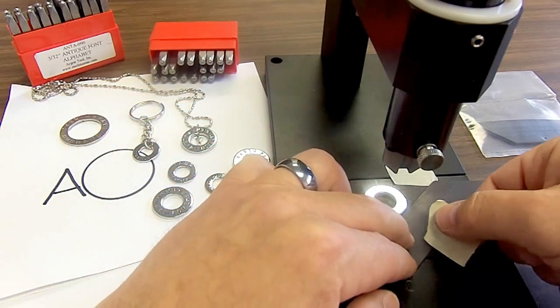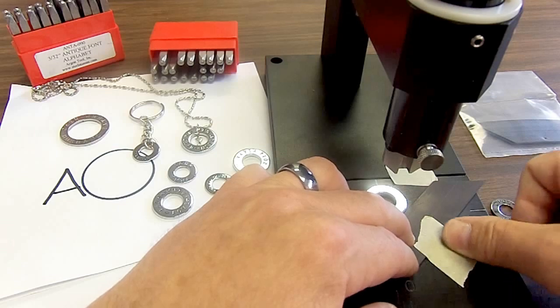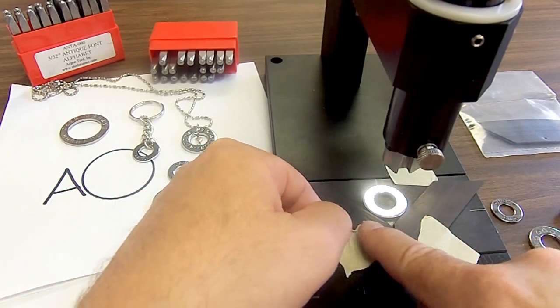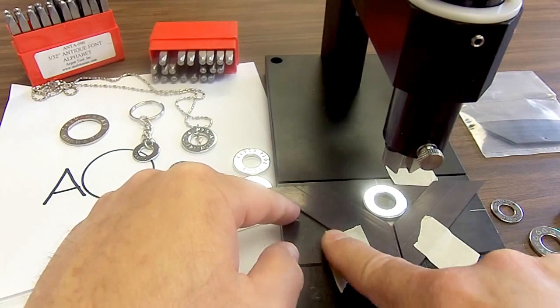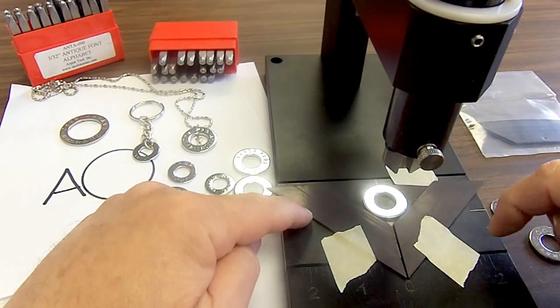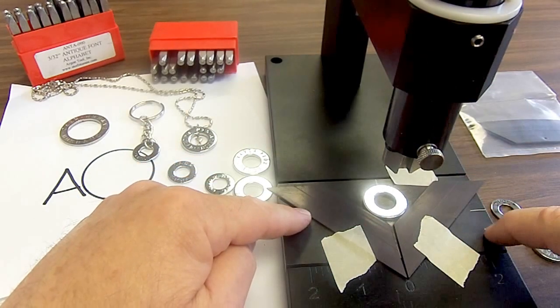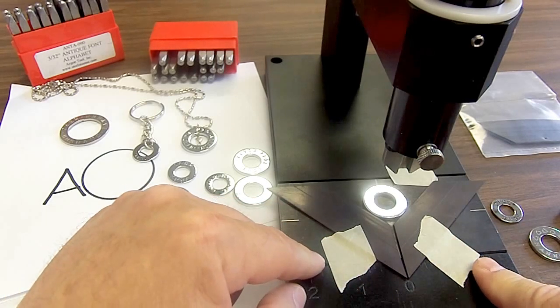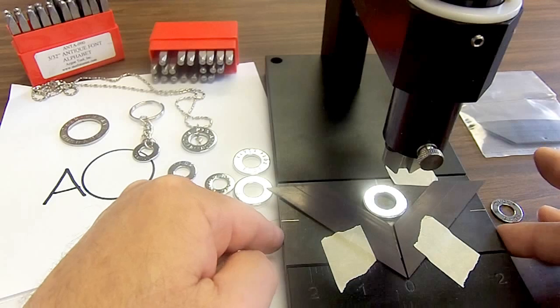And again, I like to put a little piece of tape on the magnetic tape and the base. As you can see, I've got the tape, the base, or the anvil, and the base all covered with my tape. So everything is nice and firm and straight.